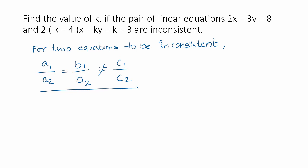In this case what are the values? a1 is 2, a2 is 2k minus 4. b1 is minus 3, b2 is minus k. That should not be equal to c1 which is 8, and c2 is k plus 3.